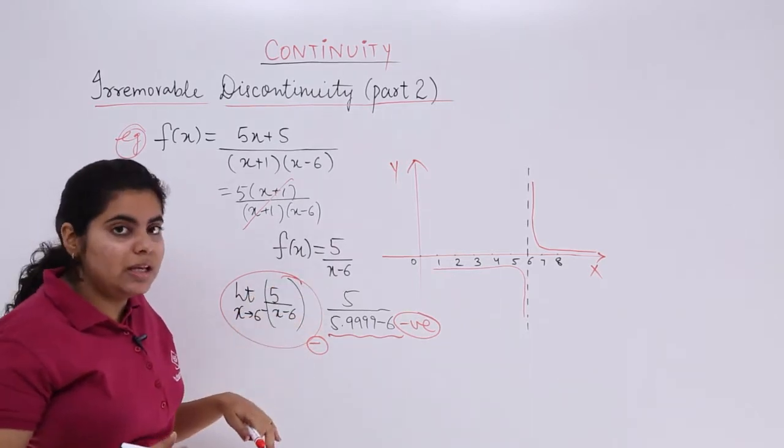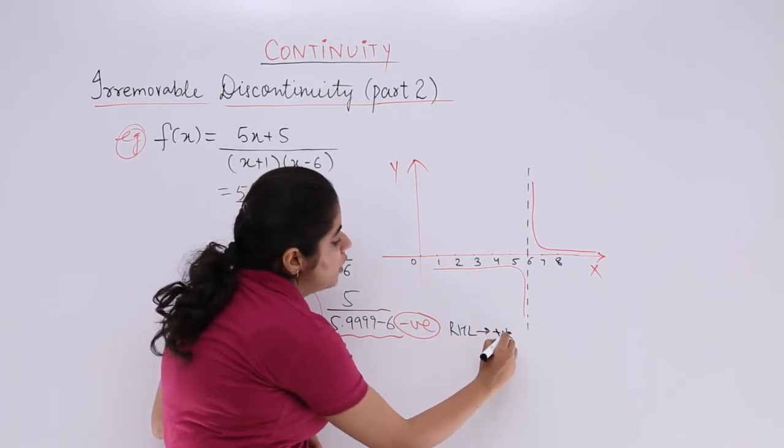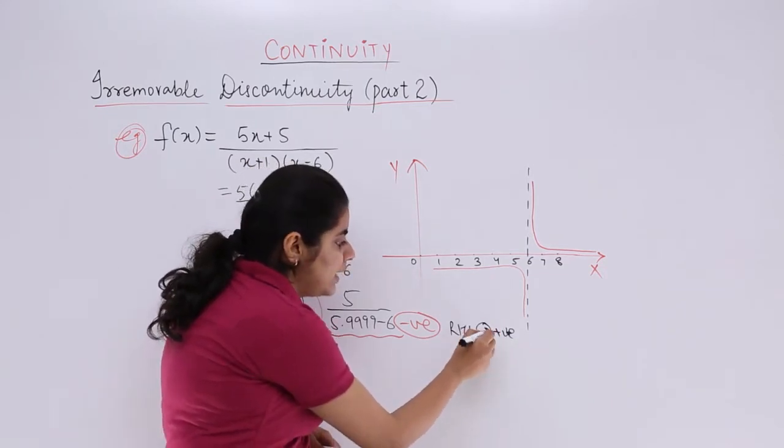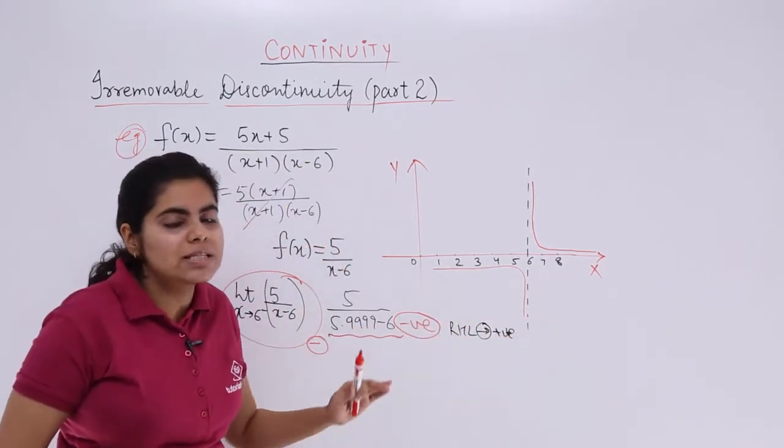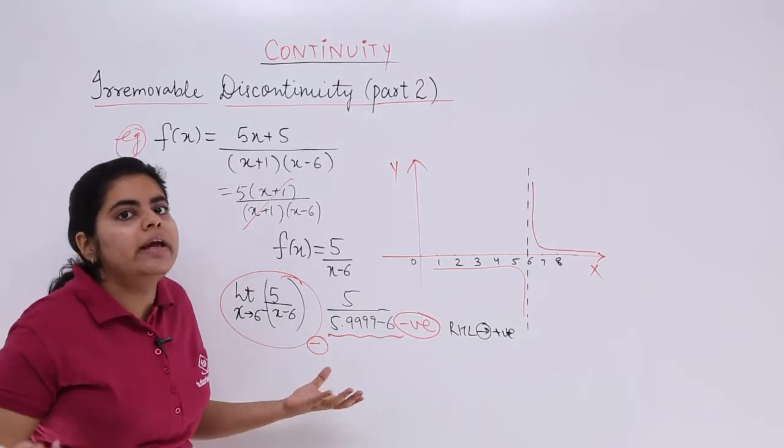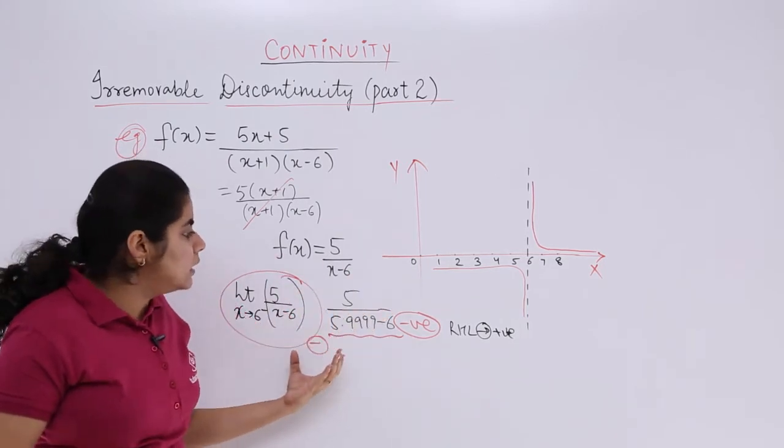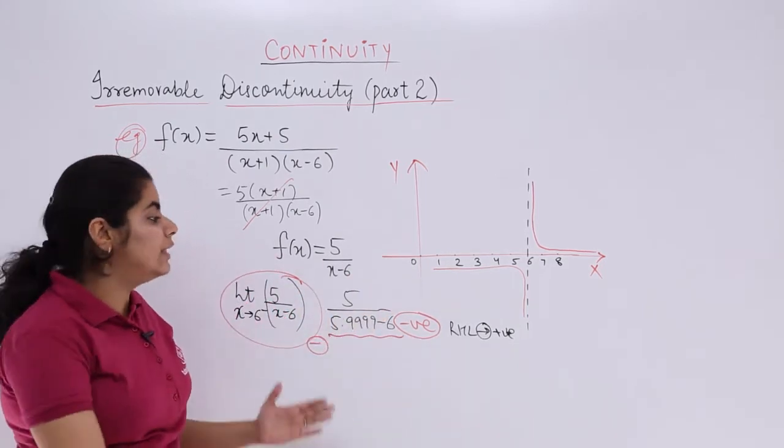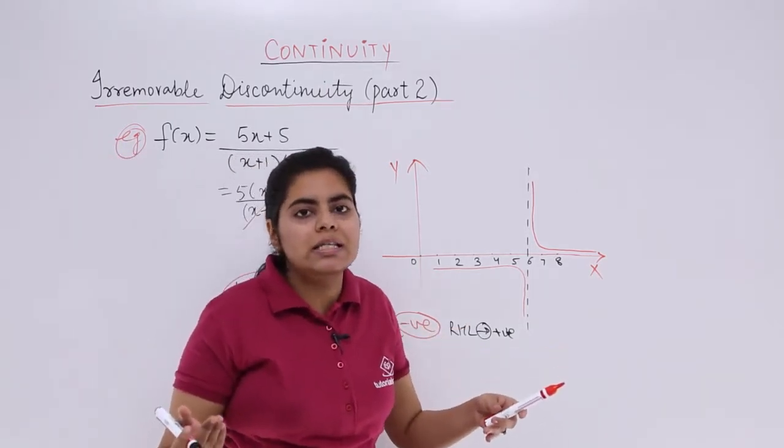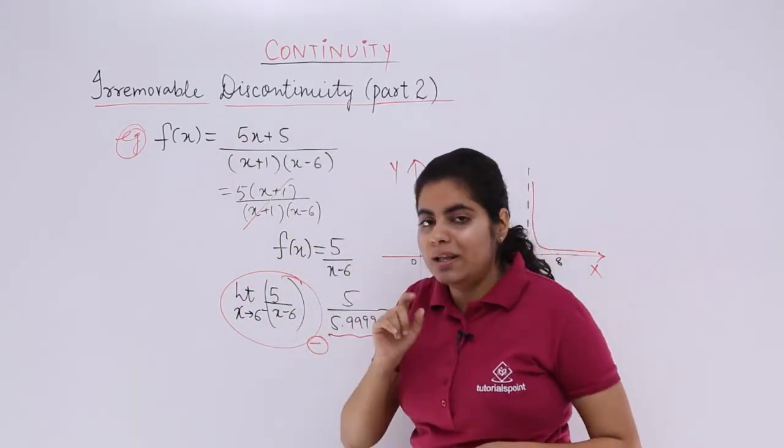So left-hand limit will give me negative, and if I take right-hand limit, it will be positive. Very less but yes positive. This is not tends to. Remember, this is just that it will give me something of that sort value. So a positive value and a negative value can never be equal because we do not take 0. Any positive value and negative value can never be equal. That means left-hand limit and right-hand limit are not going to be equal. When the limit does not exist, that means the limits are not equal. The function is not continuous, so it is discontinuous.